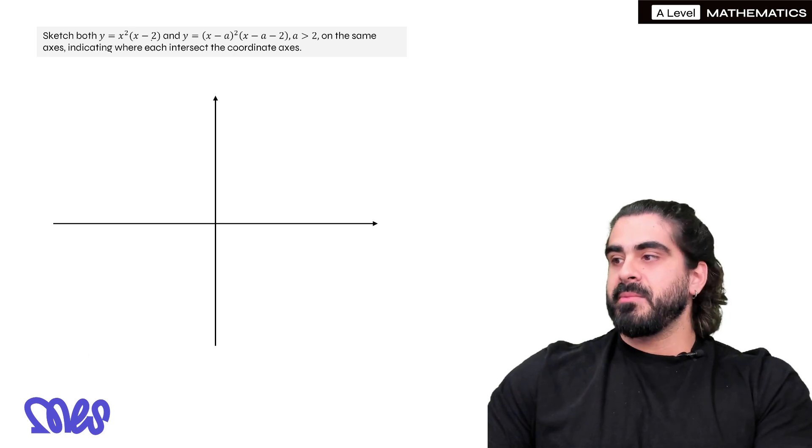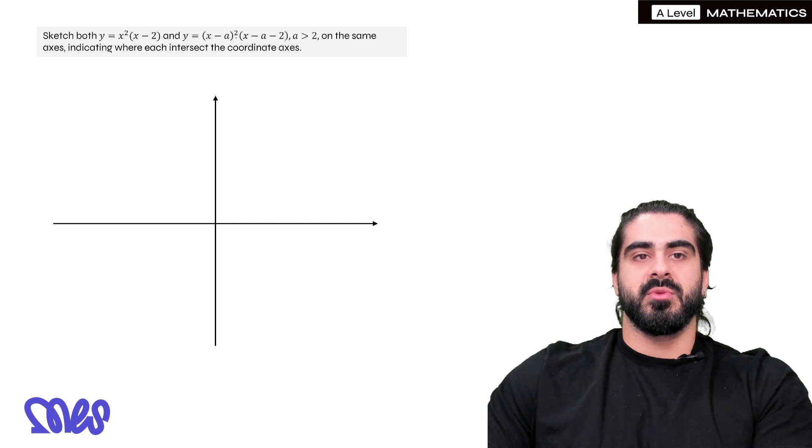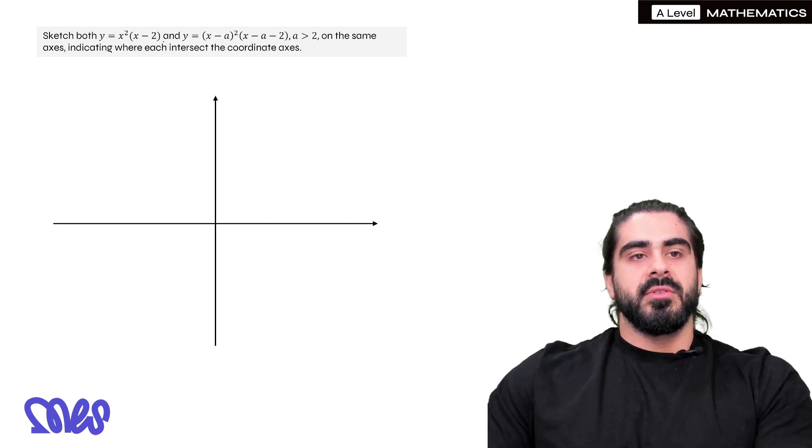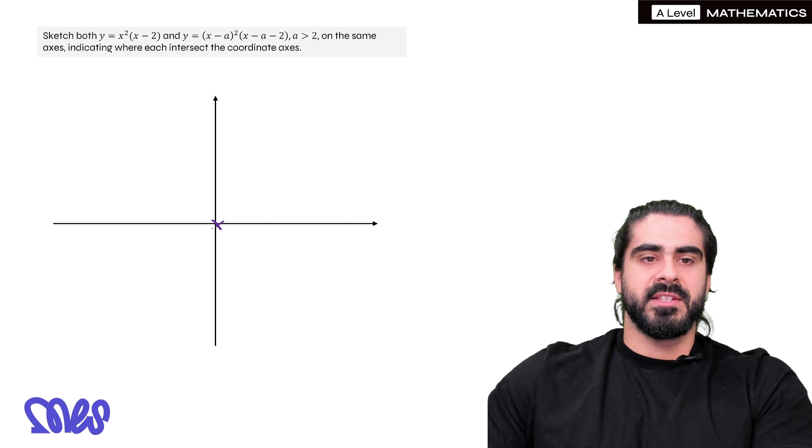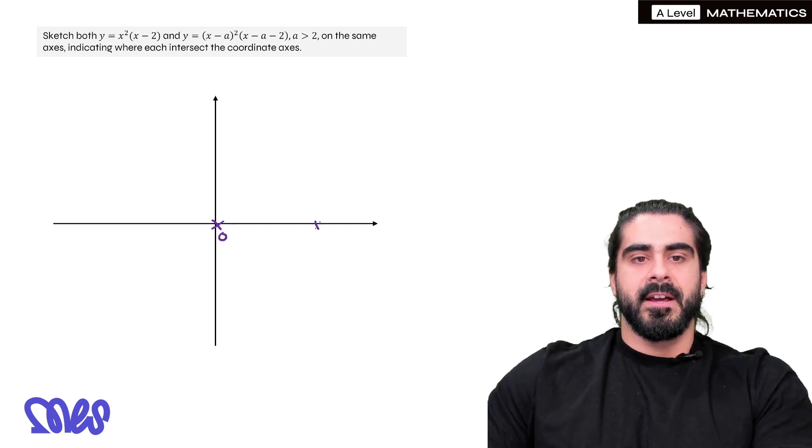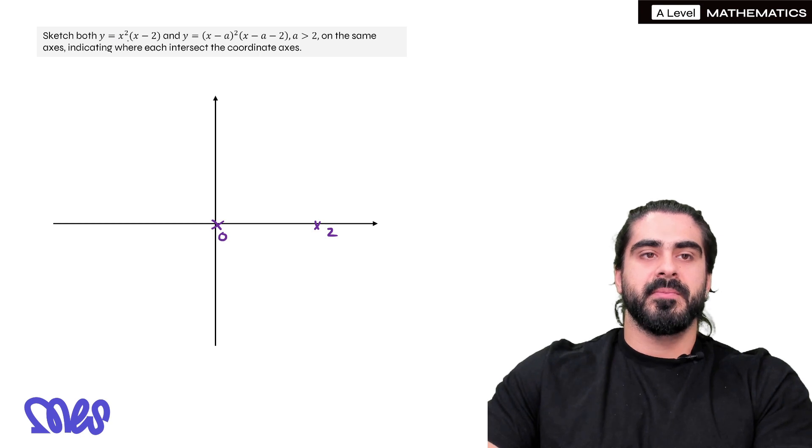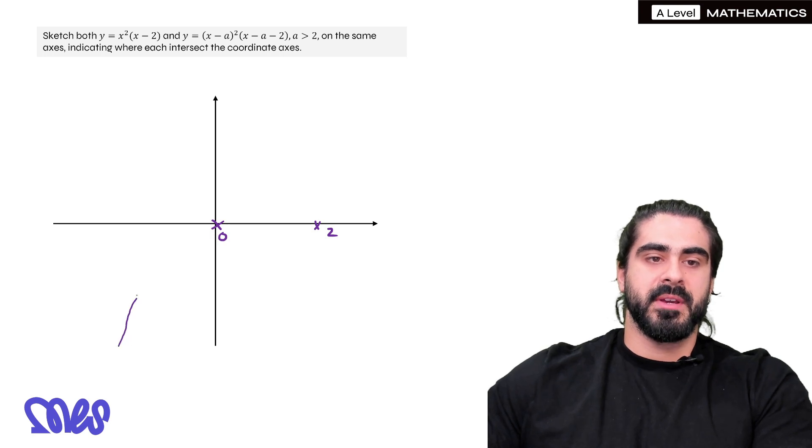Sketch both y = x²(x-2), and y = (x-a)²(x-a-2), where a is bigger than 2, on the same axes, indicating where each intersect the coordinate axes. So it's only a sketch, but there's some things that they're going to be focusing on that are really important. So x²(x-2). So that's going to cross at (0,0). We've done this in a previous episode. And 2. The only difference is because it's x², it's a double root. So it's going to look like a quadratic at 0, but it's starting from the bottom. Yeah, so we have a cubic. It's going to come up to 0. It's only going to touch it, come back down, and then go back up.